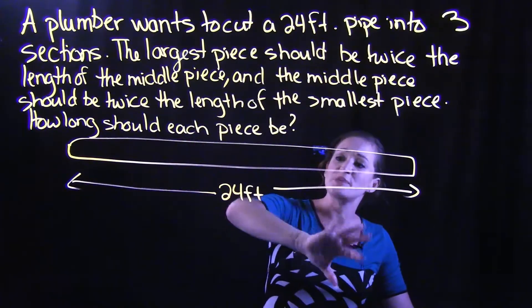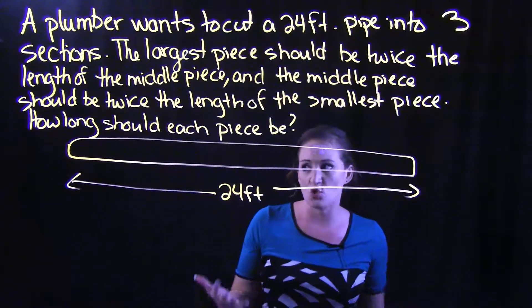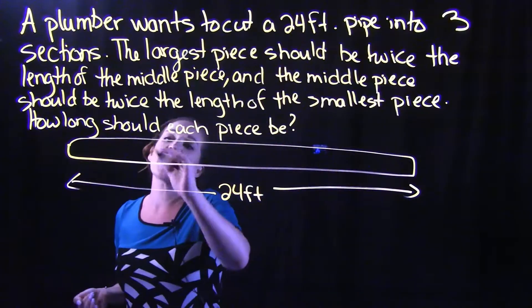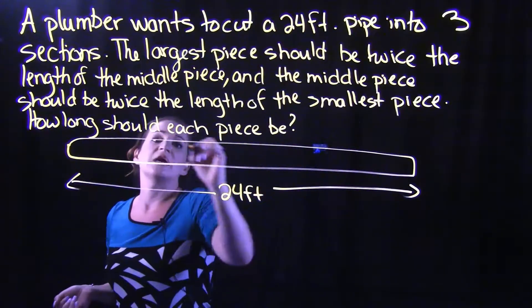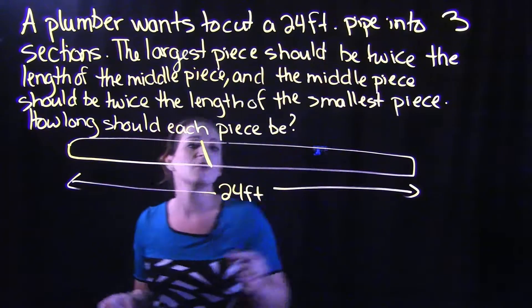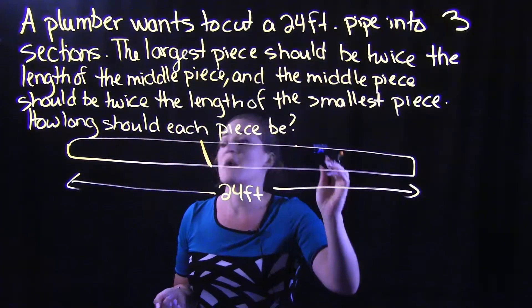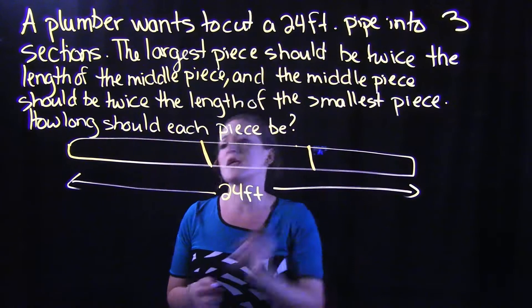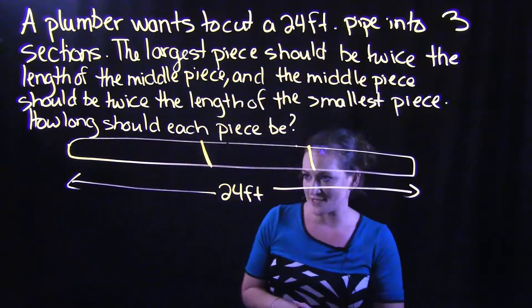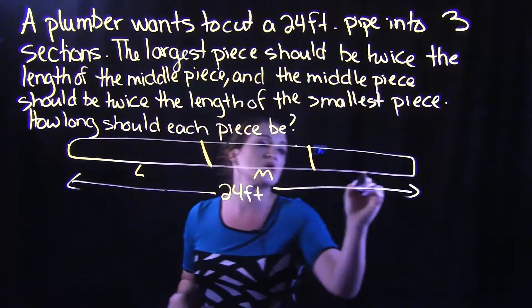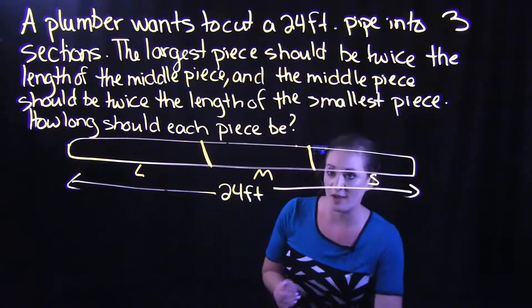We're going to have a large piece, a middle piece, and a short piece. So let's see, this is my large piece here. Then I'm going to have my middle piece. And I don't think I'm necessarily drawing this to scale, but that's okay. So I have my large, I have my middle, I have my small here.